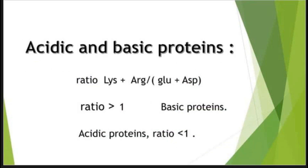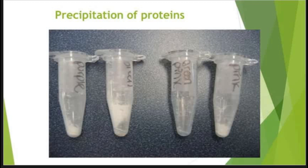Proteins are amphoteric in nature; their acidic or basic character depends upon the pH of the solution and also upon the presence of specific amino acids. If the ratio of basic amino acids (lysine and arginine) to acidic amino acids (glutamic acid and aspartic acid) is greater than one, the protein is considered basic. If this ratio is less than one, the protein is considered acidic.